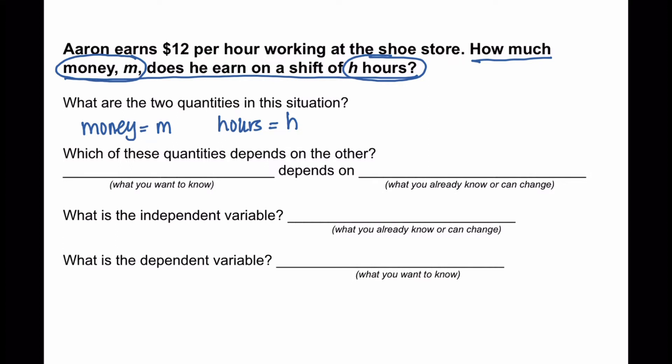In this particular case, we want to know how much money Aaron will earn. So what do we want to know? The money earned, or in this case money with the variable M. So the money earned depends on the number of hours H that Aaron works.